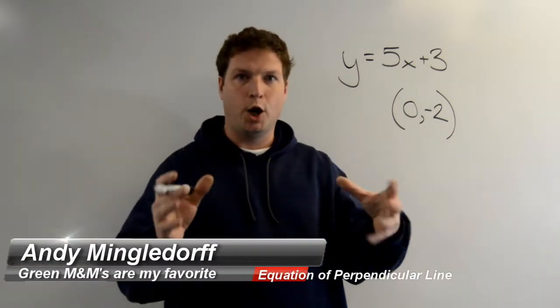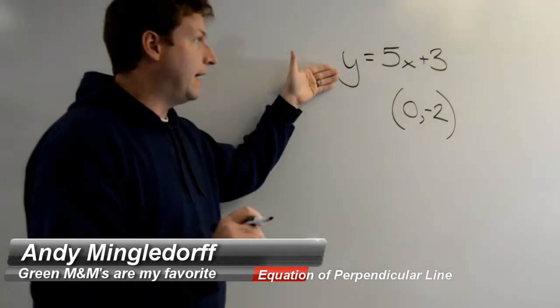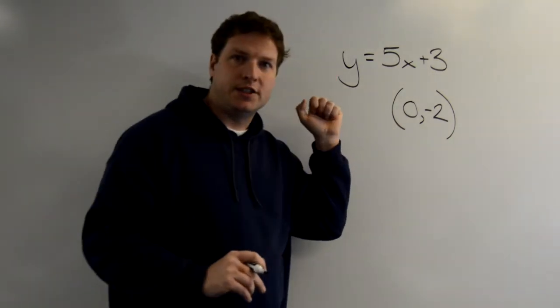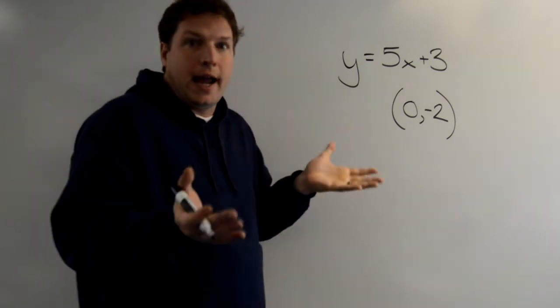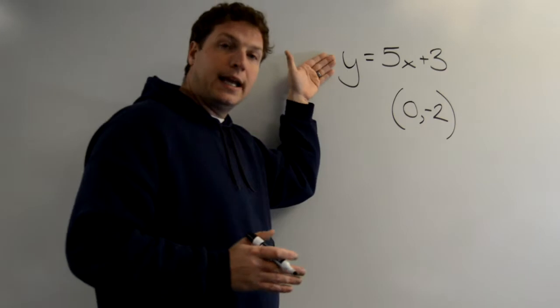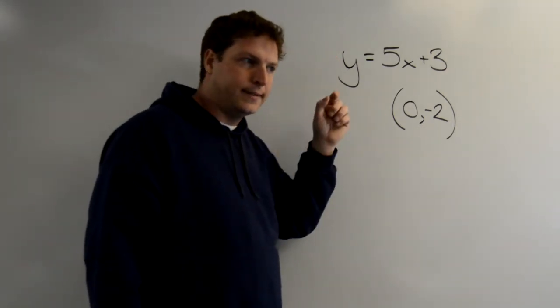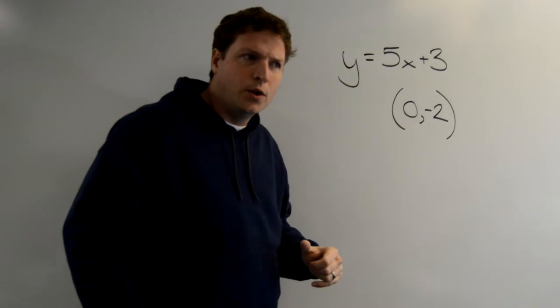Okay, more perpendicular line stuff. Find this line y equals 5x plus 3 and I have a line that I want to create that is perpendicular to this one and passes through this point. What should I do? Well, we learned that the slope of a perpendicular line is the negative reciprocal, so let's do it one step at a time.